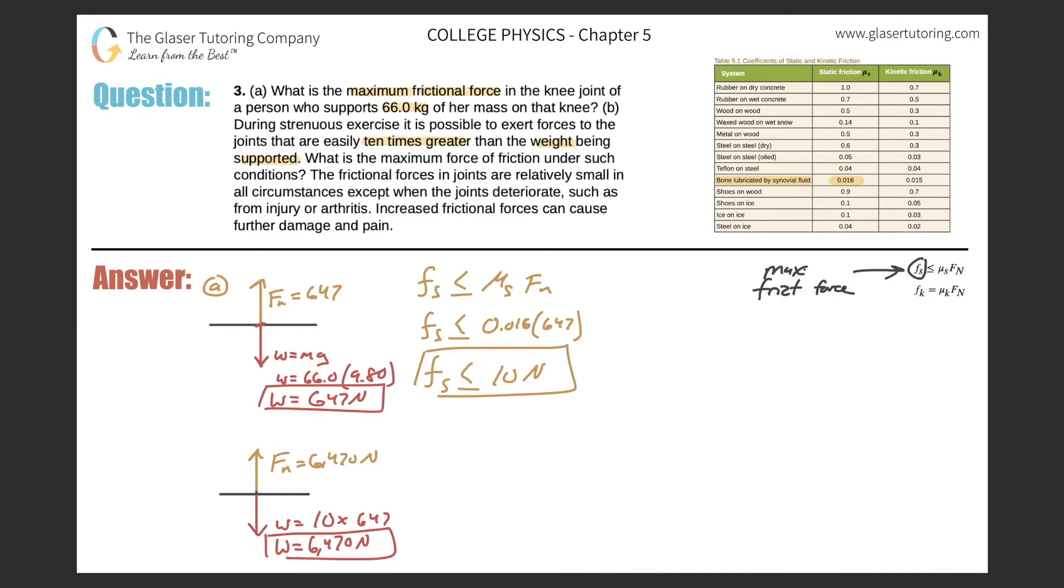Wonderful, so now I can do the same calculation. It's still going to be the same coefficient, so let's use the same formula. The static frictional force is less than or equal to the coefficient of static friction multiplied by the normal force.